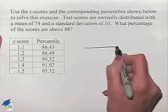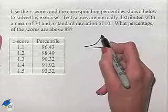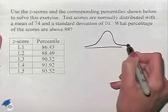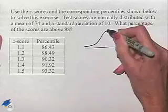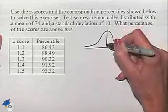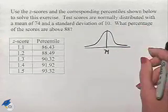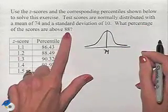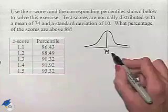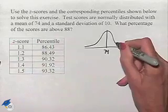Let's sketch out a picture to see what we're dealing with. We have a normal distribution. In the middle of that normal distribution, we're going to place our mean of 74. The other value that we're interested in is the score of 88, which we can see is larger than 74, so we're going to place it to the right of 74 on our chart.